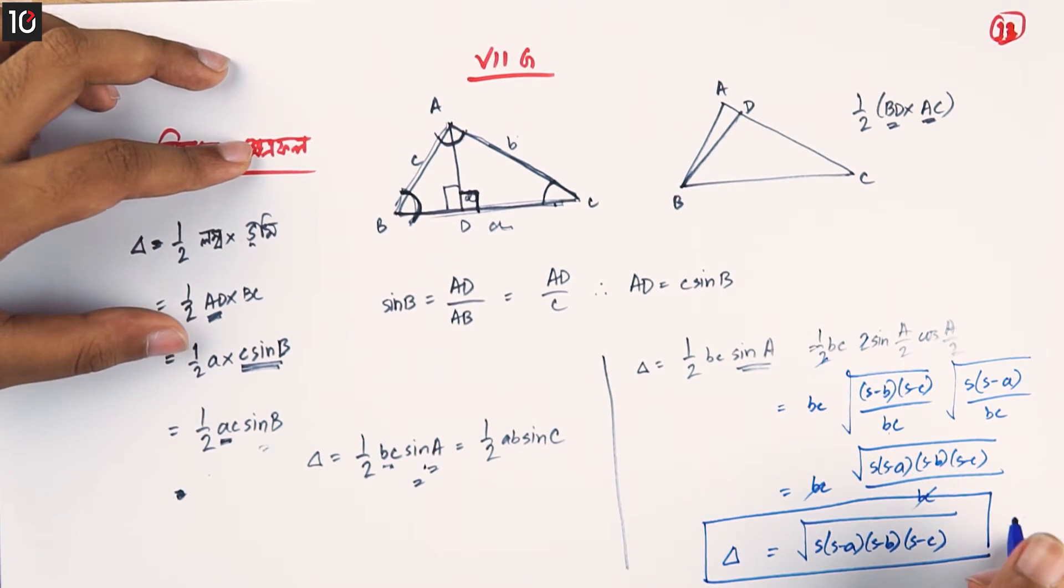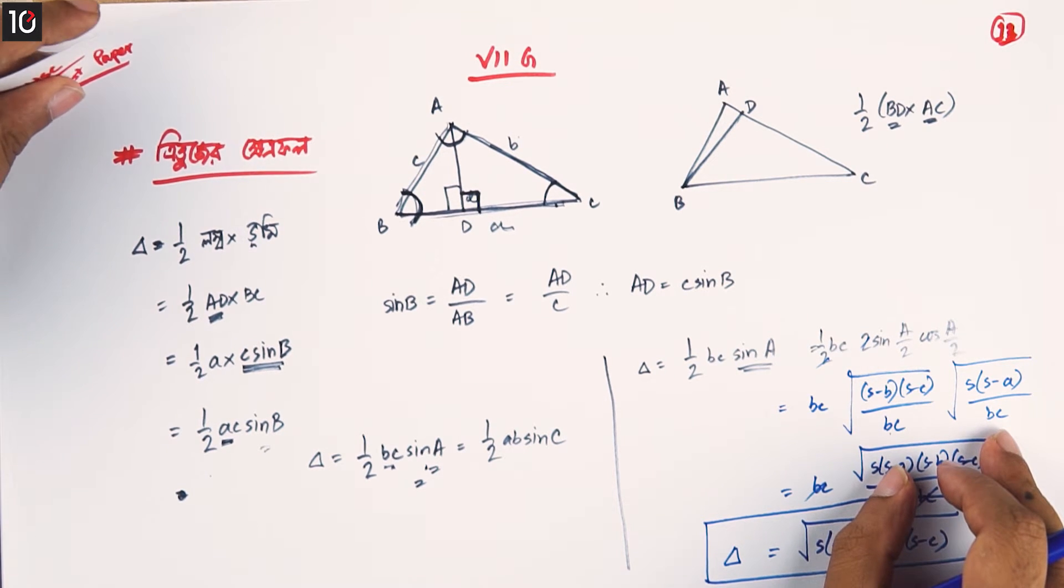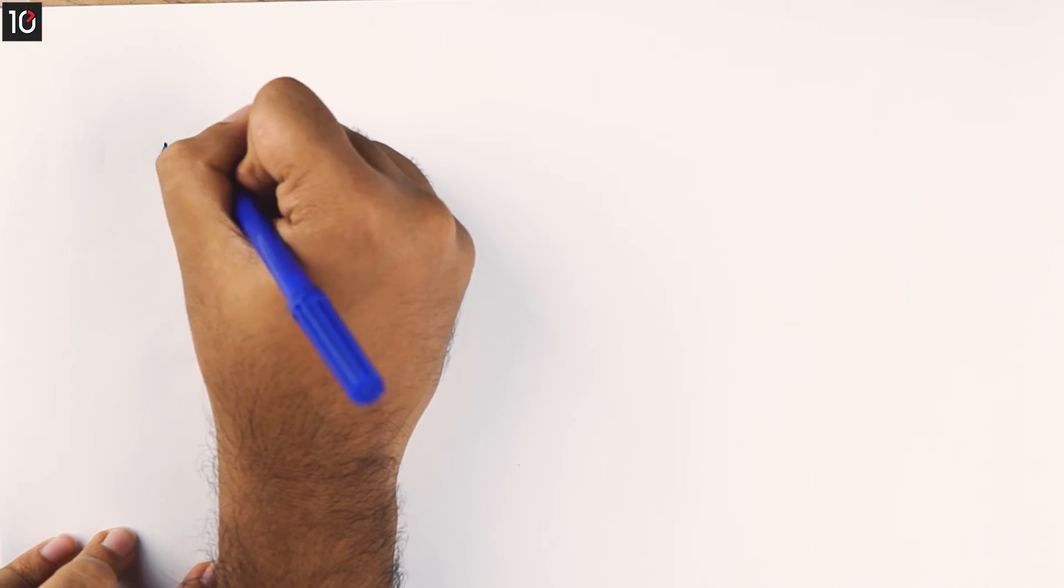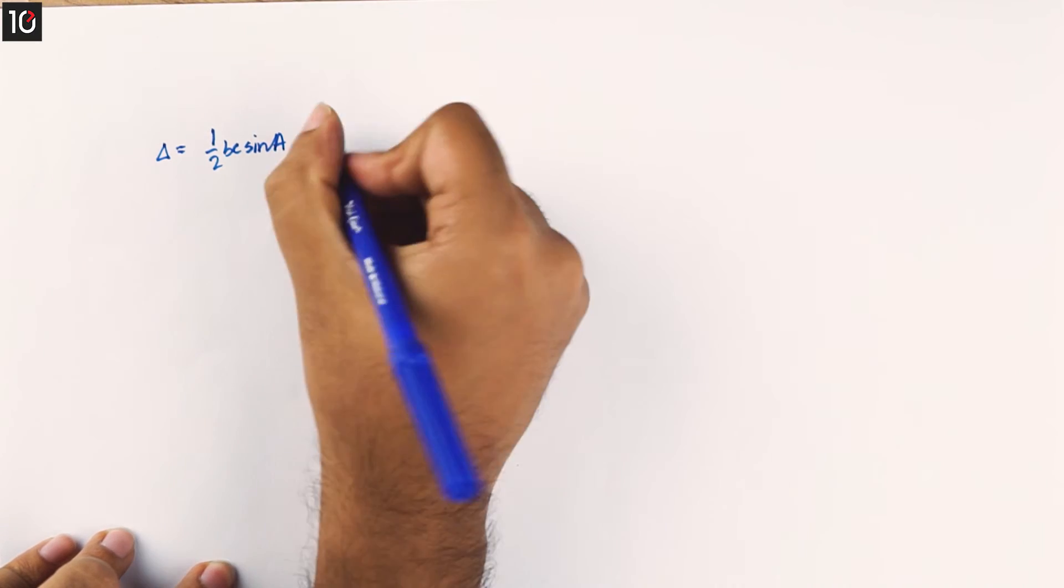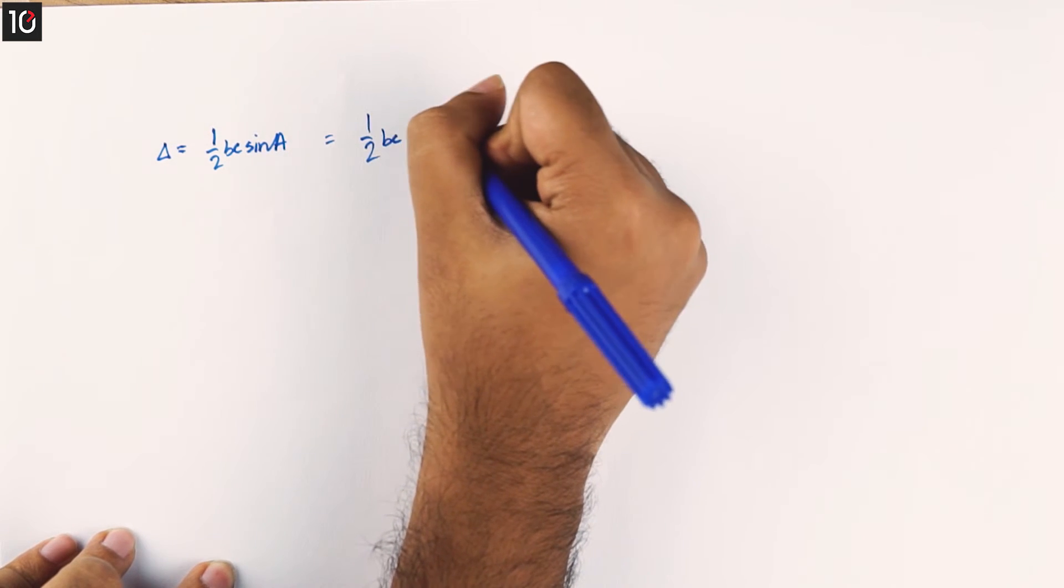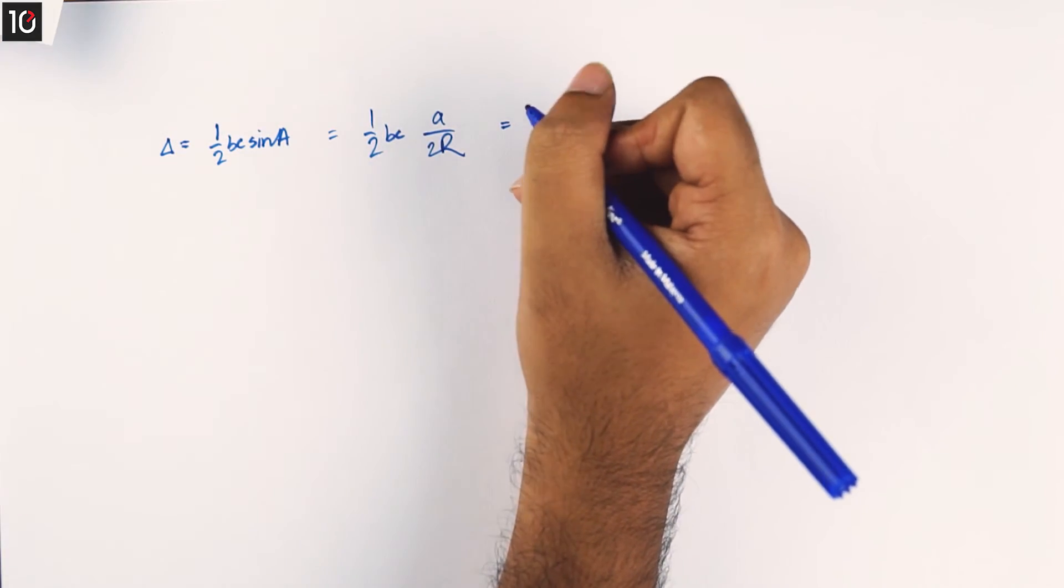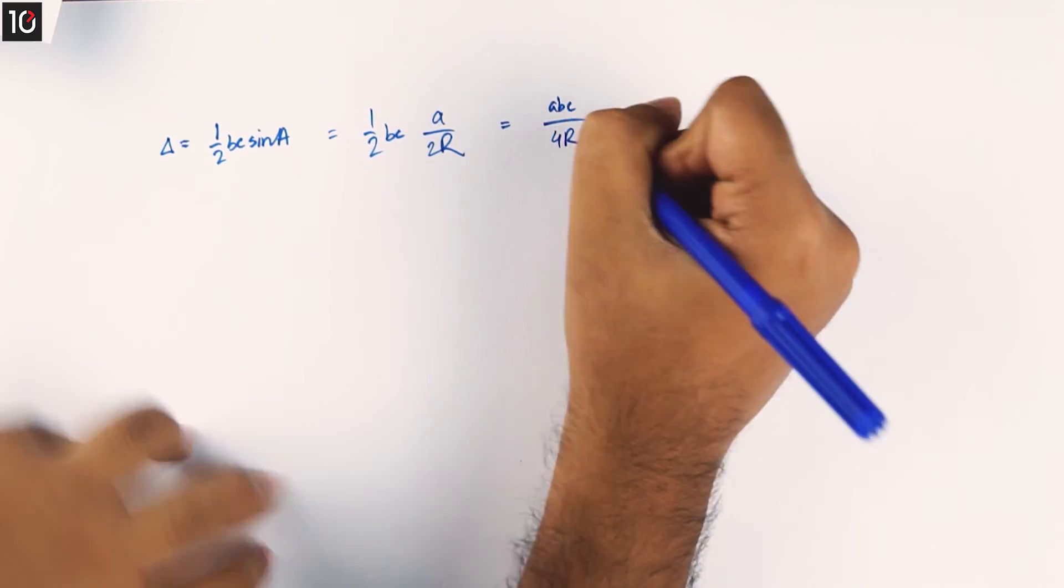We are adding another way. We said that BC is equal to A by twice R. If we use sin A, half into BC into sin A by twice R. So we have to write ABC divided by 4R.